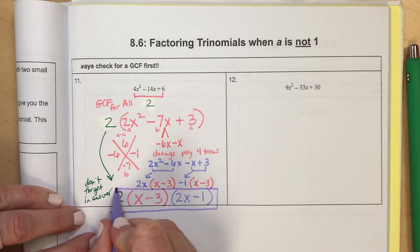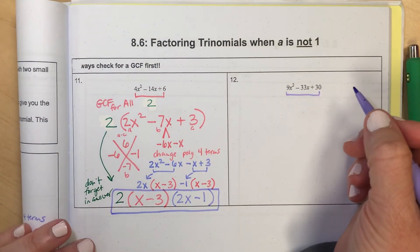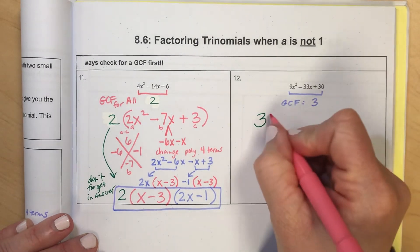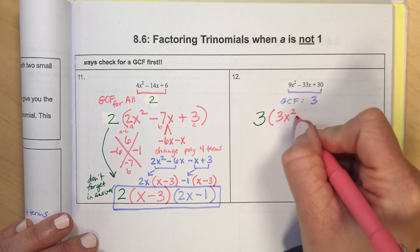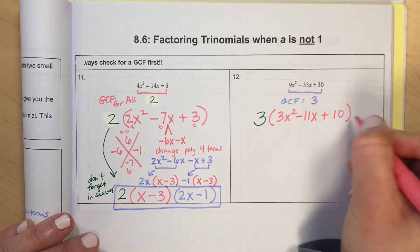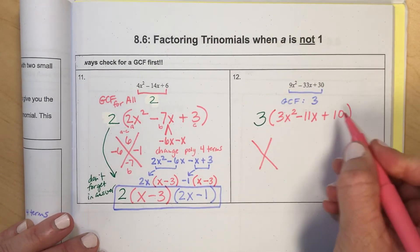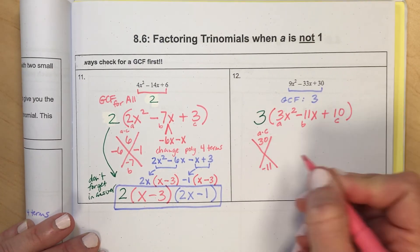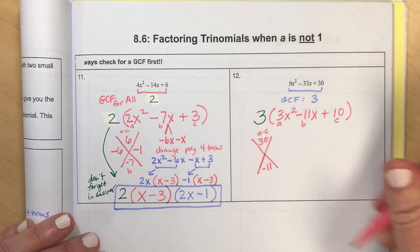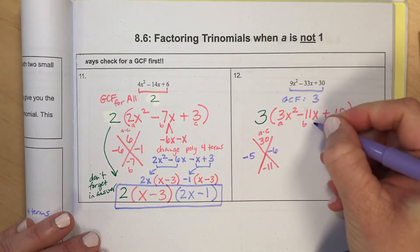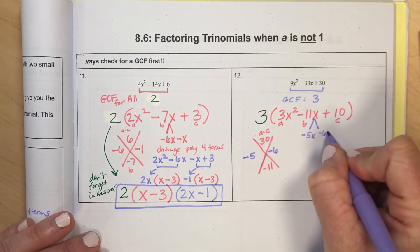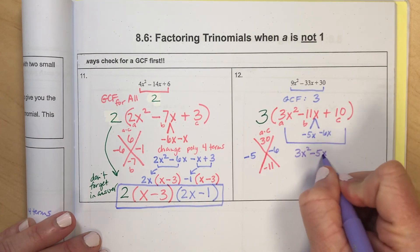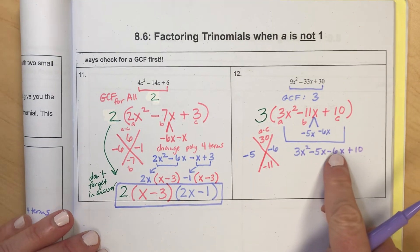One more example. The GCF for all three terms is 3. Dividing all terms by 3: 9 divided by 3 is 3X squared, 33 divided by 3 is 11X, and 30 divided by 3 is 10. Now do the big X with this inner trinomial. A is 3, B is negative 11, C is 10. A times C is 30. B is negative 11. What two numbers multiply to make 30 and add to make negative 11? That's negative 5 and negative 6. The middle splits to those two numbers with X.